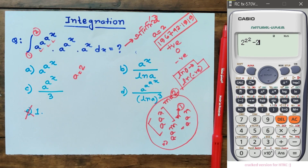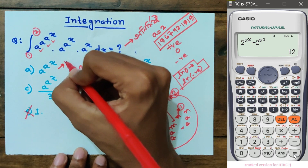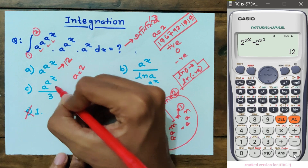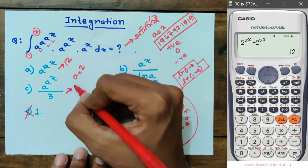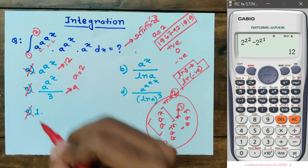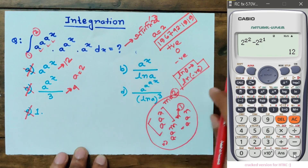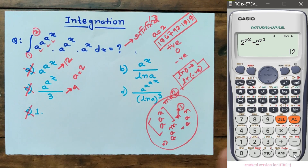2 to the power 2 to the power 2 to the power 2 to the power 1. This is our answer is 12. So if we have 12, we have 12 and we have 4.